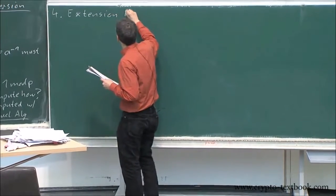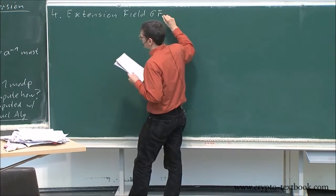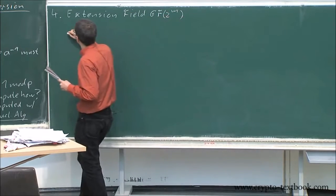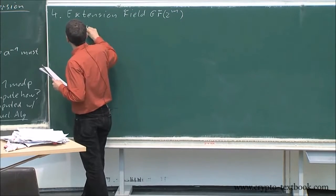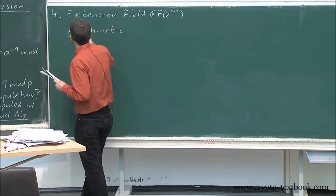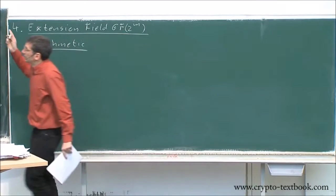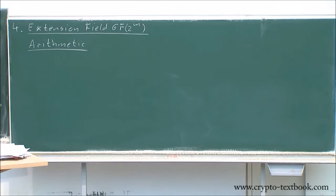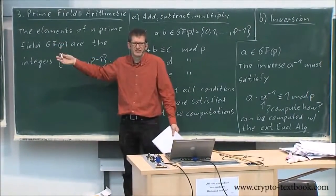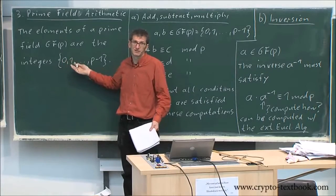Extension field GF(2^m) arithmetic. Let's go back in time 10 minutes. I said what are the elements of GF(p) of a prime field, and then I said it's a trivial statement - of course the elements are numbers right? Zero, one, two, three, integer numbers.